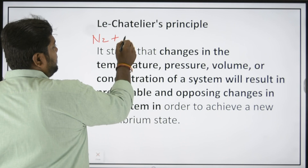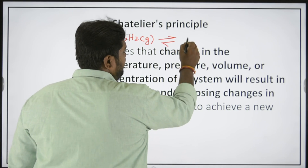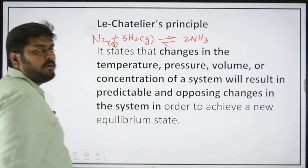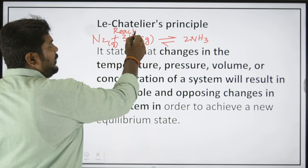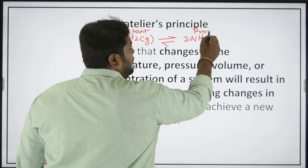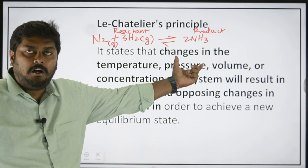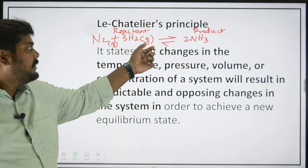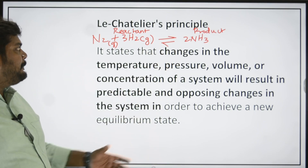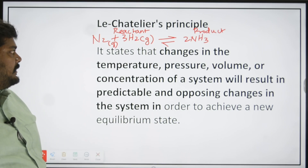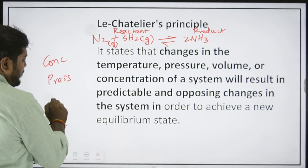For example, I am going to take the formation of ammonia. This will be your reactant and this will be your product. So, in the reactant side you have nitrogen and hydrogen in equal amounts, and ammonia is the product in equal amount — that is the meaning of the equilibrium symbol. Le Chatelier's Principle works based on three things: one is concentration, next one is pressure, and then one is temperature.